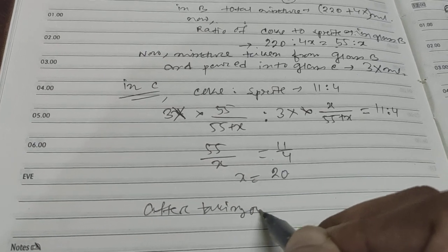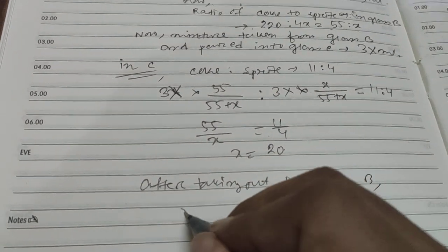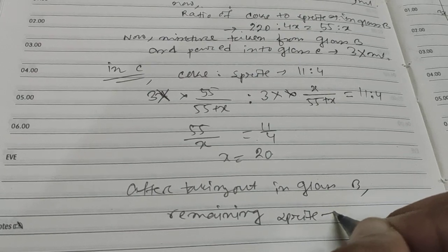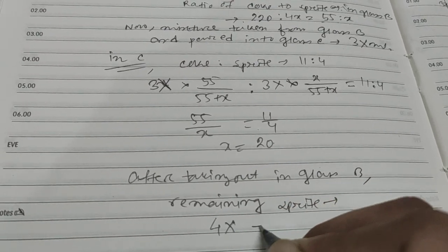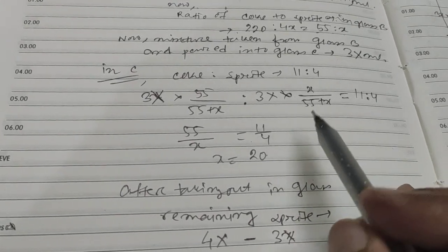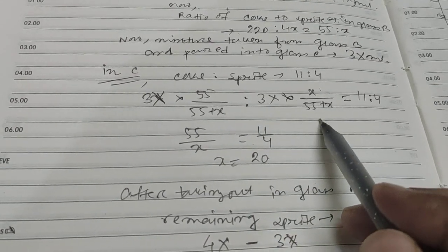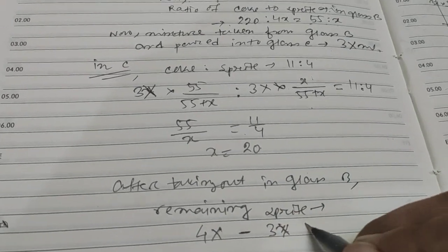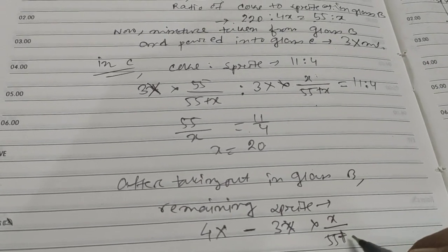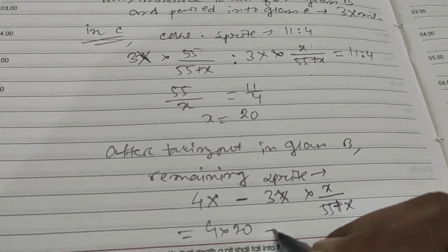After taking out, the remaining sprite in glass B: initially 4x, and the proportion taken out is 3x multiplied by x divided by 55 plus x. Now put the value of x, so 4 into 20 minus 3 into 20 into 20 divided by 55 plus 20.